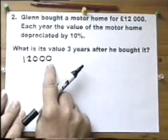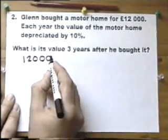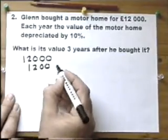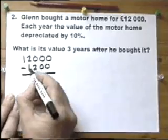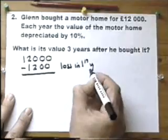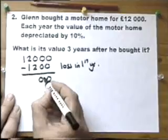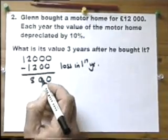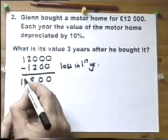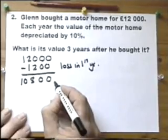We bought the motorhome for £12,000. It depreciates by 10%, and to find 10%, we just lose the zero off the end and get £1,200. That's the loss in the first year. Let's subtract this. Without a calculator, do be careful because a lot of people get these questions wrong. That's the value at the end of the first year: £10,800.